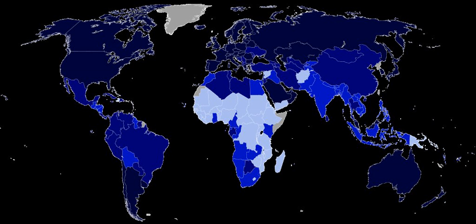It was developed by Indian Nobel Prize winner Amartya Sen and Pakistani economist Mahbub ul-Haq, with help from Gustav Ranis of Yale University and Lord Meghnad Desai of the London School of Economics, and was further used to measure a country's development by the United Nations Development Programme.